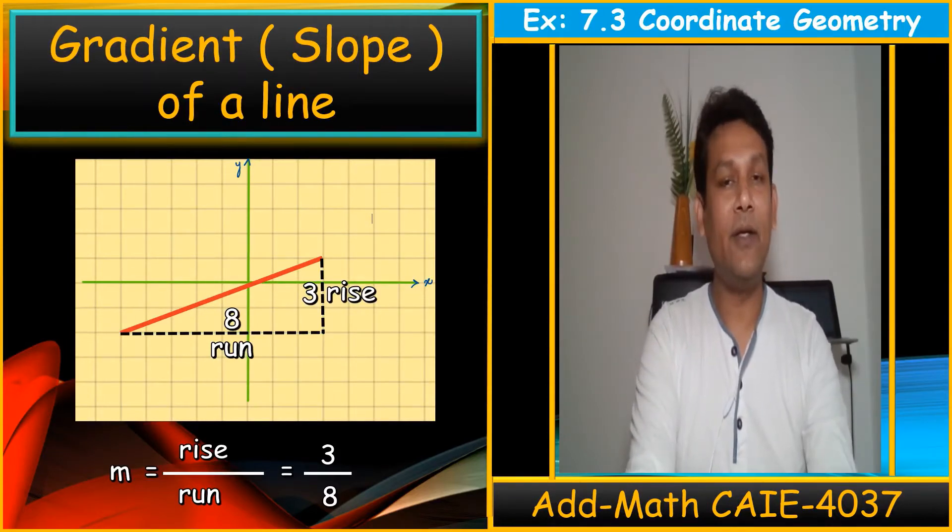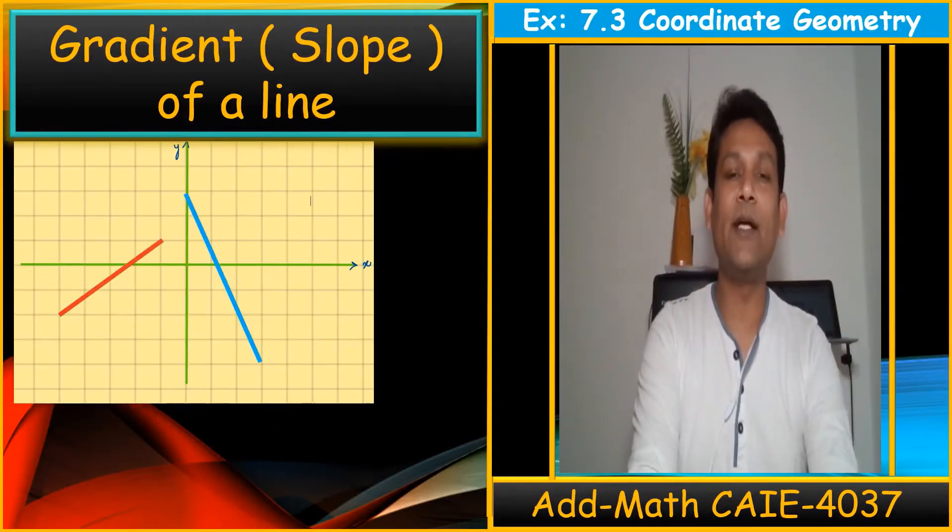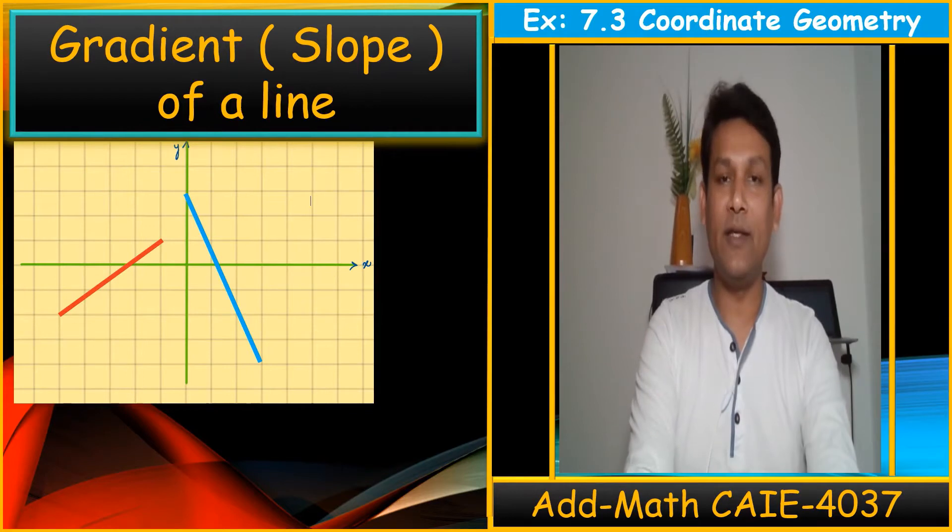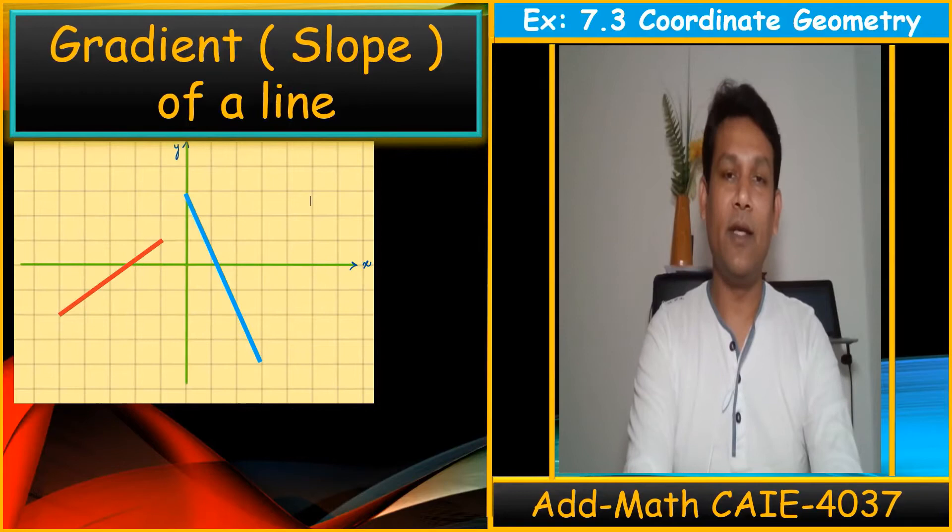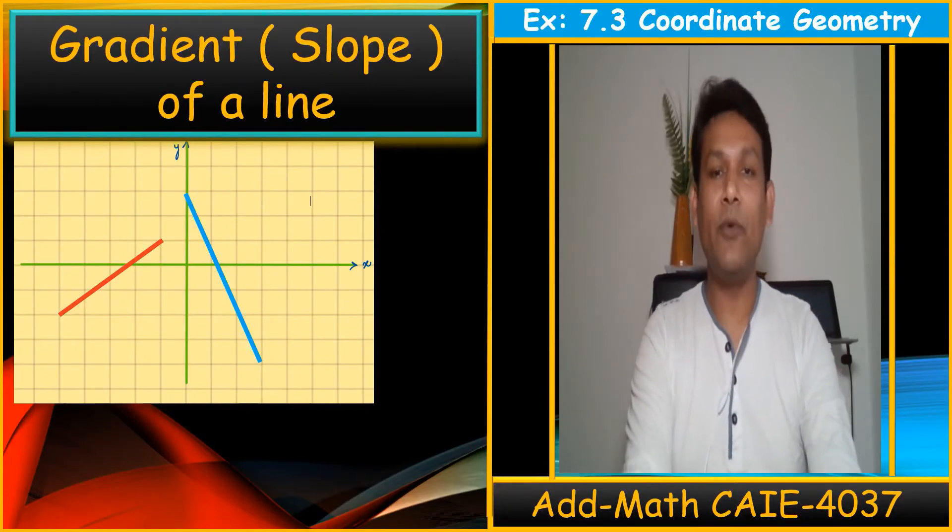How we can decide the gradient is positive or negative? I would like to give one more example. You can see these two lines, red line and the blue line. Which line has a negative gradient and which line has the positive gradient?